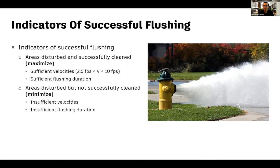Indicators of a successful flushing program are primarily reaching sufficient velocities and sufficient flushing durations. These ensure you're scouring and removing all the gunk from your water main, suspending it, and then taking it out through your hydrant — not just suspending it and leaving it in the water main. In a nutshell, a successful flushing program maximizes the successfully cleaned areas.